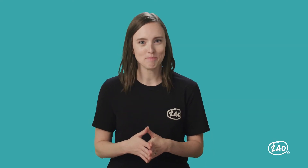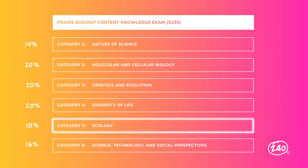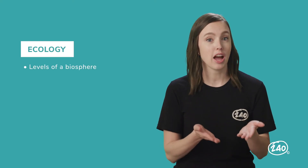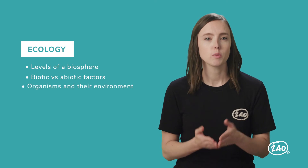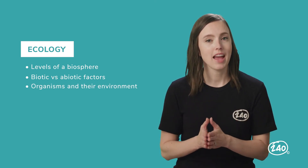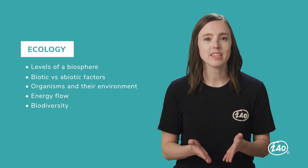Category 5 is ecology. There's a lot in this category, which is worth 10% of your exam — still about 15 questions. You'll need to know the hierarchical structure of the biosphere, biotic and abiotic factors that influence population size, relationships between organisms and their environment, energy flow, biodiversity, and tons of cycles. Let me introduce you to one of our tutors from the study guide, who'll walk you through the levels of a biosphere.